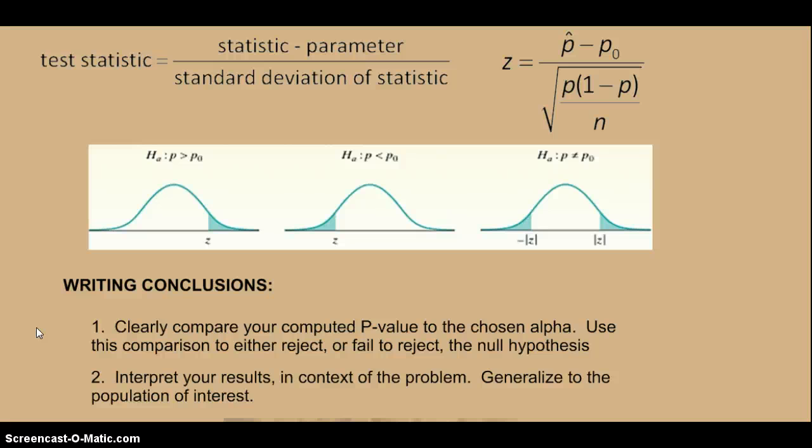So when we're done, we want to be able to say something about this truckload of potatoes. Either we believe that they are greater than 8% with blemishes or that we don't have evidence that they're greater than 8%. So again, one technical-looking sentence and then one sentence that interprets the results dealing with potatoes.